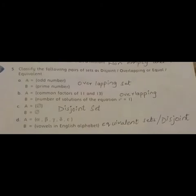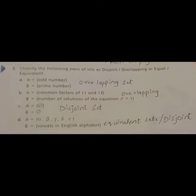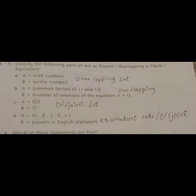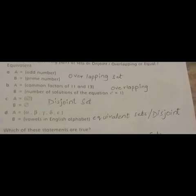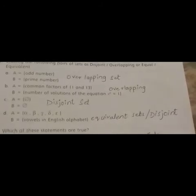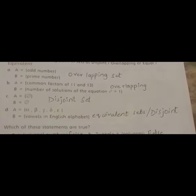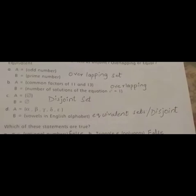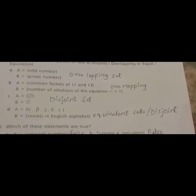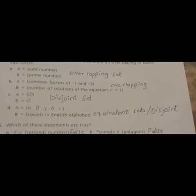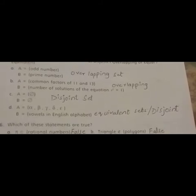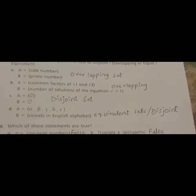Number 5. Classify the following pairs of sets as disjoint, overlapping, or equal and equivalent sets. Part A. Set A is equal to odd numbers and set B is equal to prime numbers. Odd numbers: 1, 3, 5, 7, so on. And prime numbers are numbers that are divisible only by themselves and 1, which are 2, 3, 5, 7, so on. Both sets have some common elements. That's why both sets are overlapping sets. Part B. Set A is equal to common factors of 11 and 13. And set B is equal to number of solutions of the equation x squared is equal to 1. Common factors of 11 and 13 will be only 1. And for the equation x squared equals 1, which number squared gives 1? If we take 1 squared, it is 1. If we take minus 1 squared, it is also 1. So both sets have at least one element in common. That's why both sets are overlapping sets. Part C. A is equal to the empty set symbol and B is equal to only the empty set symbol. Both sets are disjoint sets. Disjoint sets are when both sets have no common element.